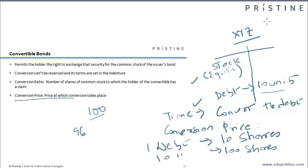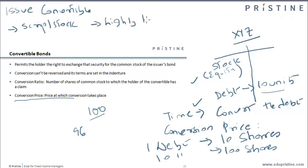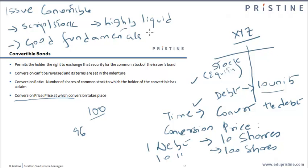One caveat is that a particular issuer like XYZ would only issue a convertible bond if its equity stock is doing pretty well. For example, if its equity stock or script is traded at a good price, is doing well in the stock market, and is highly liquid, then it would issue a convertible bond. Otherwise, if its own equity stock is not doing well and is not liquid, the whole idea of issuing a convertible bond goes for a toss.